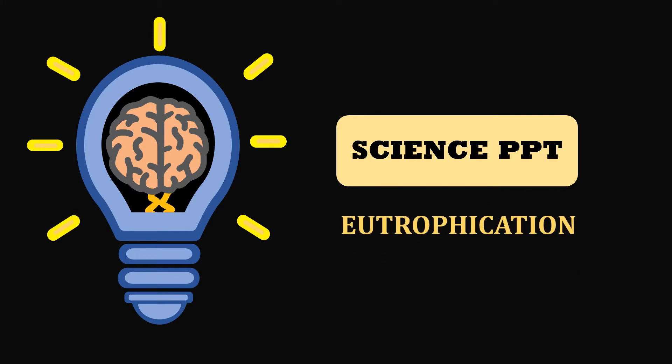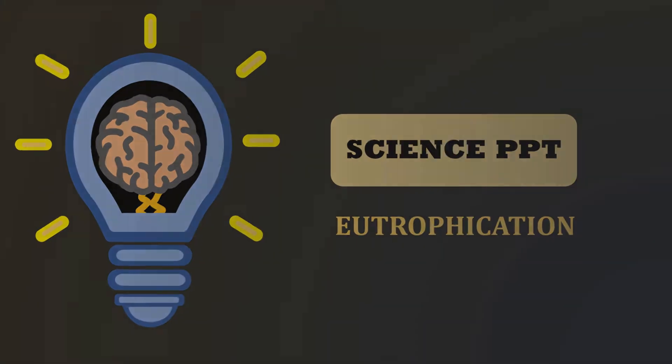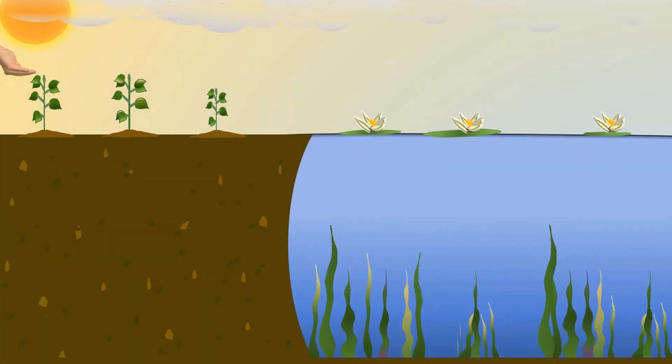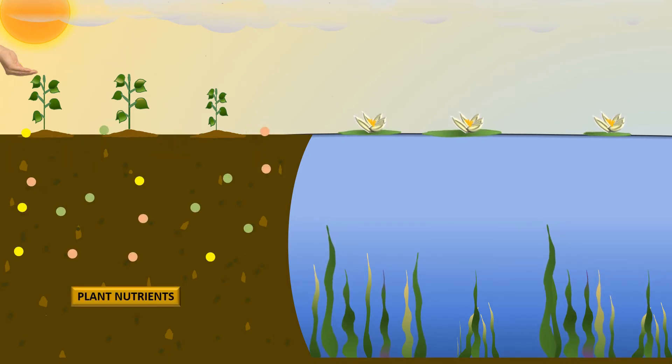To understand better, let's take a look at an agricultural farm as our example. Farmers add fertilizer into the soil to add nutrients and improve soil fertility.